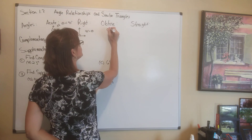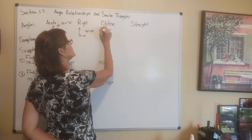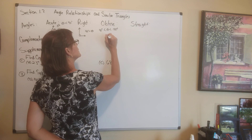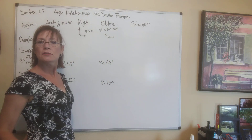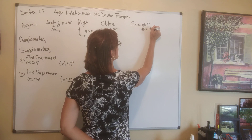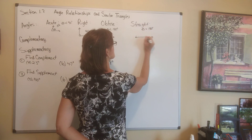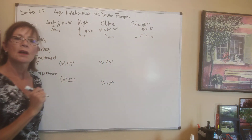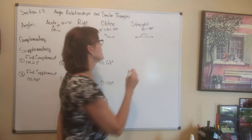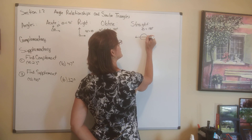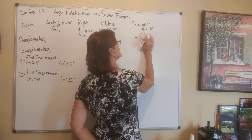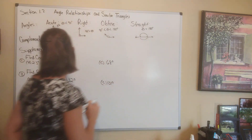Obtuse is an angle that is between 90 degrees and 180 degrees, and it might look like this. Then a straight angle is an angle that is equal to 180 degrees. This should make some sense because half of 360 is 180, so that would be halfway around the circle — all the way around would be 360. That's what a straight angle is: it's half of a circle.